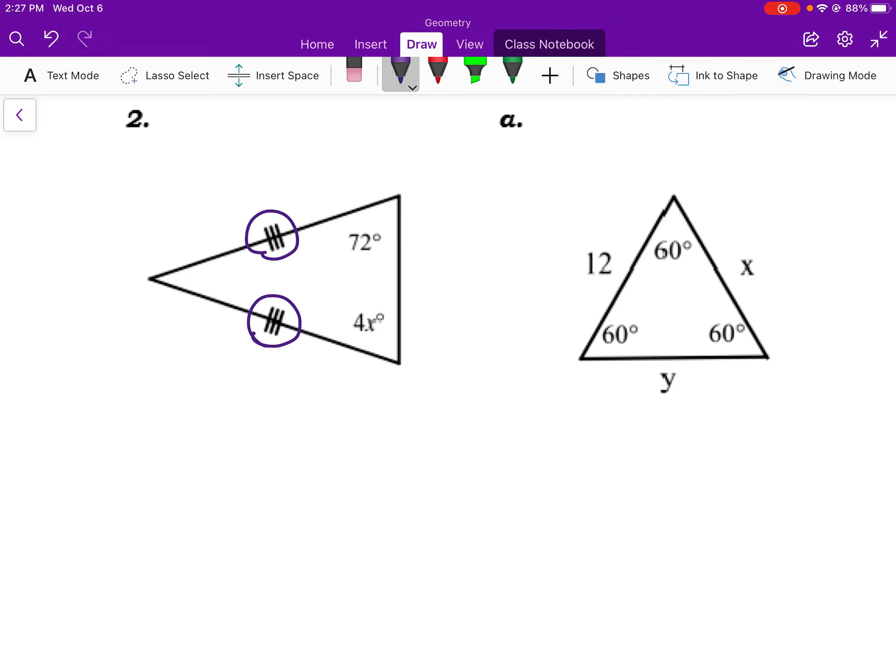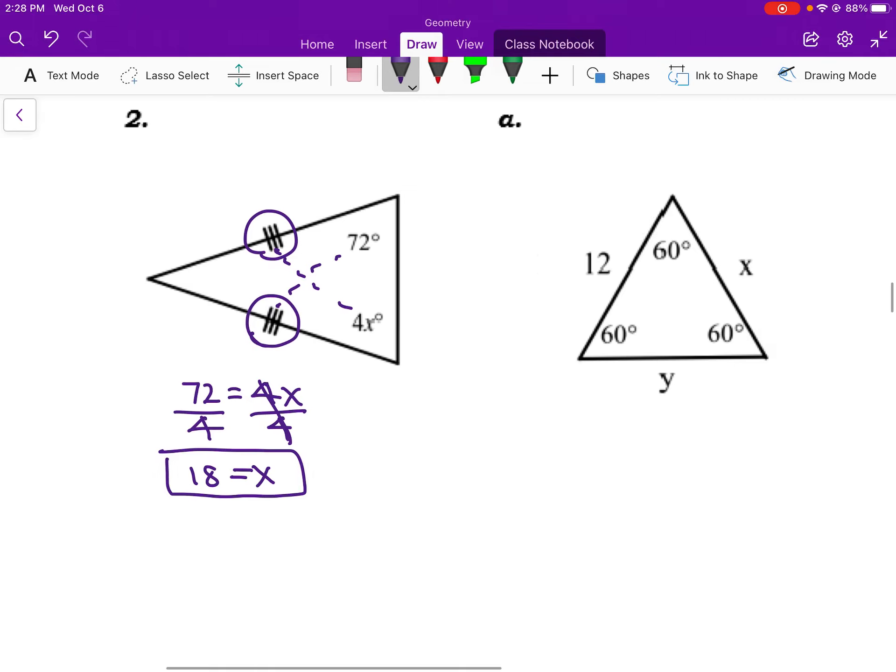Looking at number two here, I see that I have two sides. And this triple tick mark. So it's saying that these two sides are congruent. And we know that if two sides are congruent, the angles opposite them have to be the same. So that's telling me that 72 equals 4x. And if I solve by dividing both sides by 4, I end up getting 18. So x is equal to 18. So we know that about our variable here.